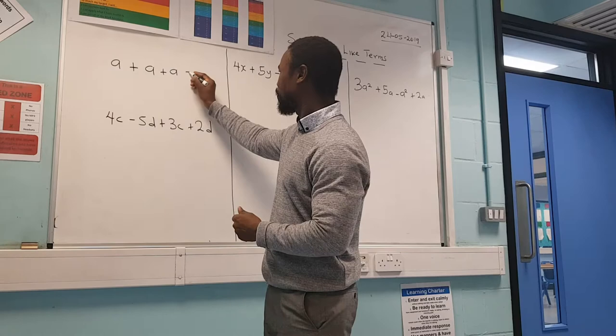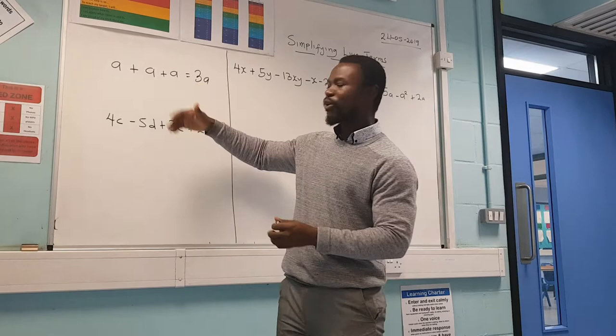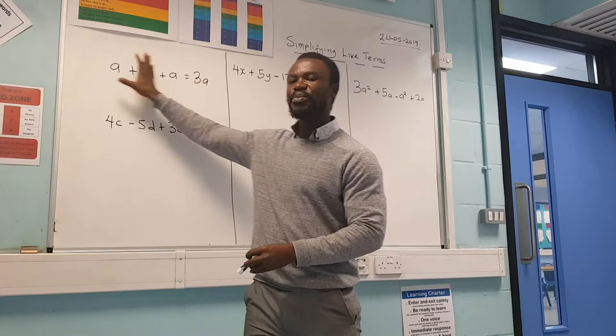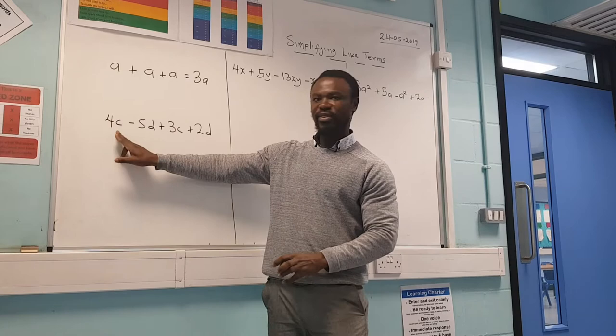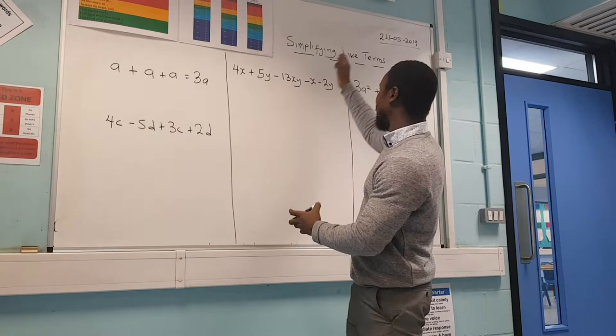So the simplified form of a plus a plus a is three a. That's the basic, very simple one. Now let's look at this one — we have numbers with letters, different letters together. That brings us to like terms.